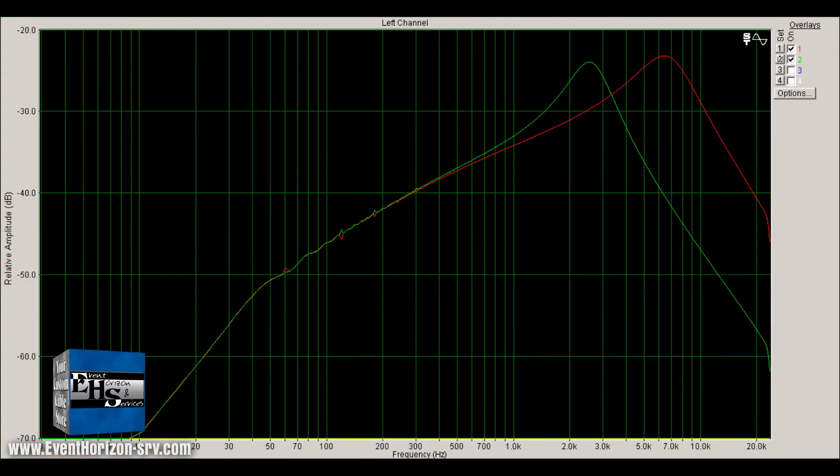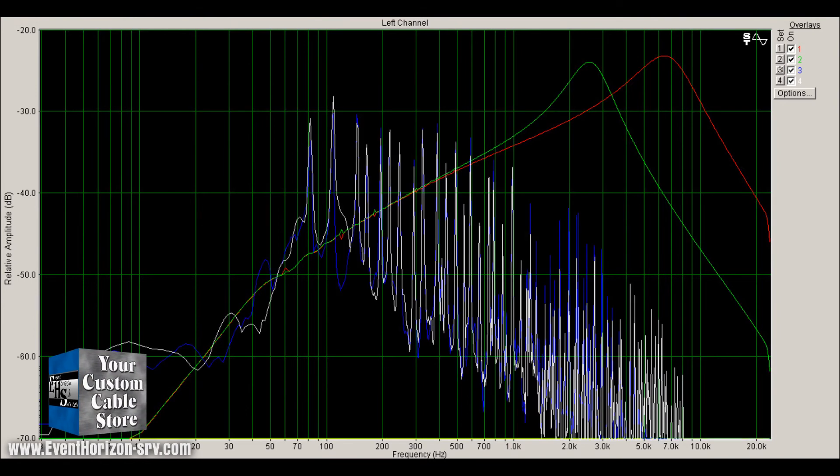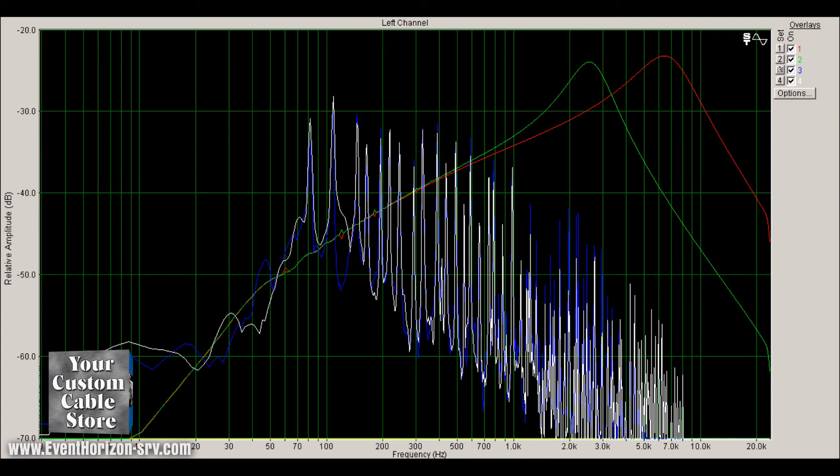For those of you that say, that proves nothing, that's a weird way to do a test. Well, here you go, here's a signal strumming the guitar as consistently as I can. The blue line is a 50 foot cable and the white line is a 1 foot cable. It is right on to the previous results. Yes, there are level differences, but we are comparing the frequency differences, not the actual levels, so it looks right on to me.